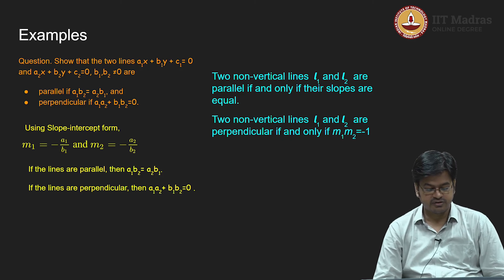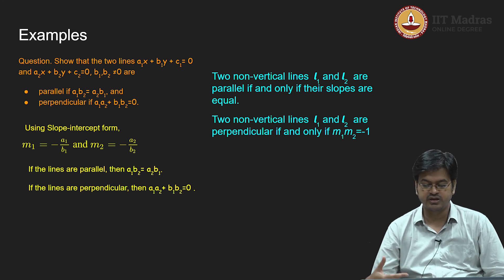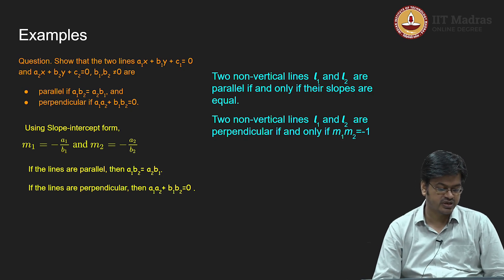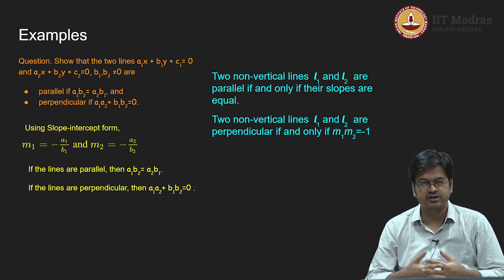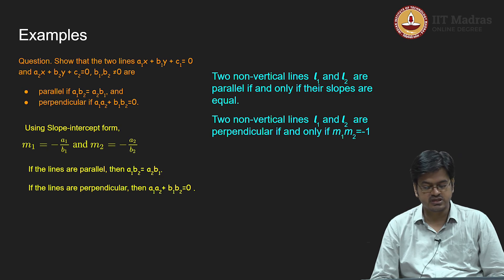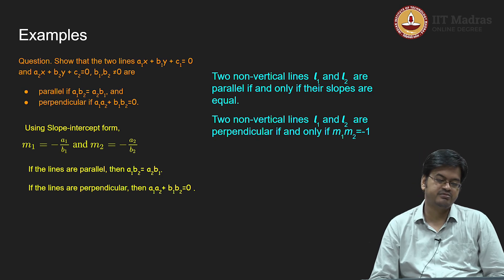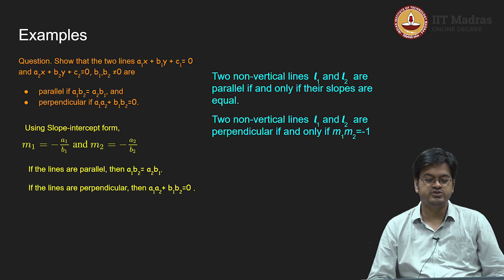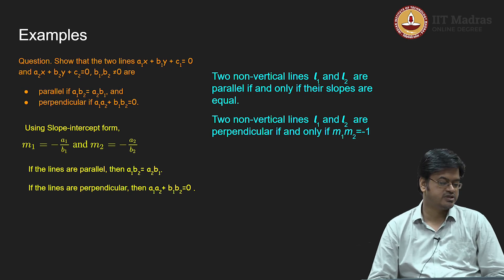What we have done is related the characterization of perpendicular and parallel lines via slope to the general form of the equation. This gives a new condition: for two non-vertical lines given in general form, check that a₁b₂ = a₂b₁ for the lines to be parallel, and a₁a₂ + b₁b₂ = 0 for the lines to be perpendicular. This is another characterization of parallel and perpendicular lines using the general form of the equation of lines.